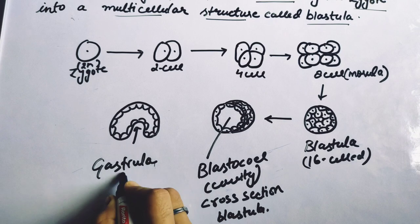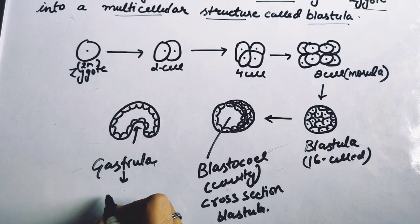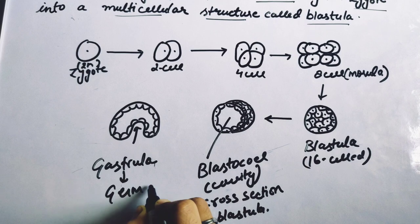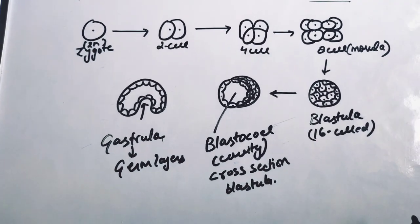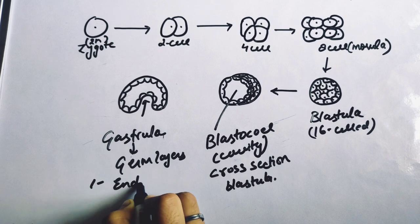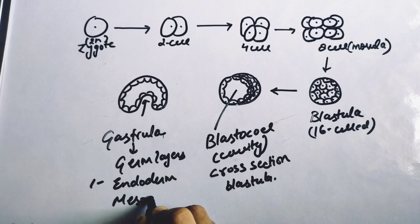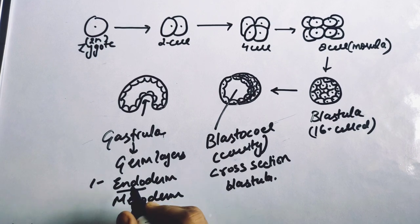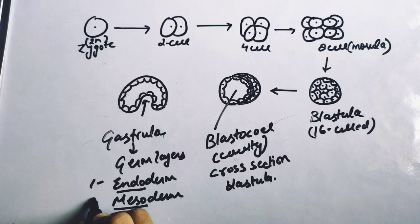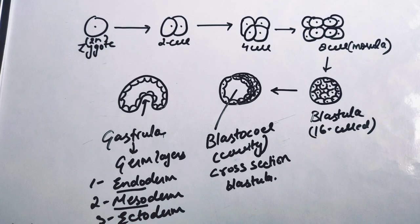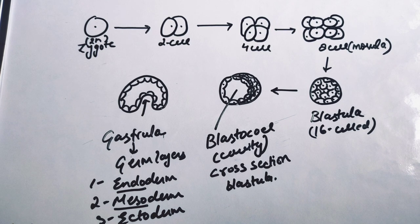After gastrula formation, we get three germ layers. The first is the endoderm, which is the inner layer. The mesoderm is the middle layer. The third is the ectoderm, which is the outer layer. After gastrulation, the result is the formation of these three germ layers.